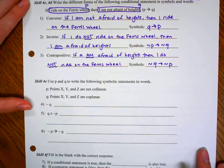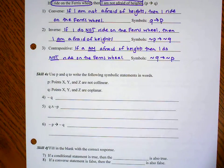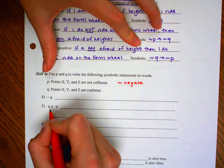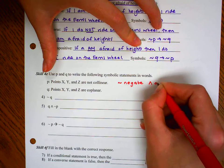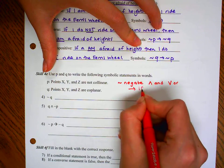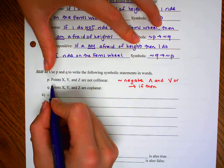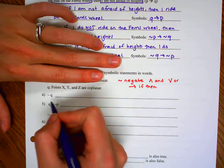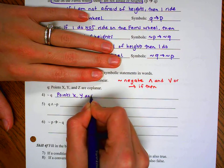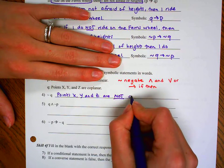Skill 4E, use P and Q to write the following symbolic statements in words. Let's check a couple key symbols really fast. That squiggly means to negate. That means and. If instead it had been that, it would have been or. And that is our if then. So here we go. It's a squiggly Q, so the negation of Q. We're going to take Q and say points X, Y, and Z are not, we're negating, not coplanar.